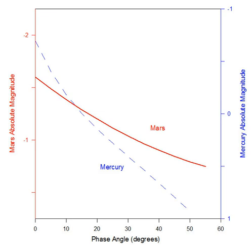The phase curves of many asteroids have also been observed, and they too may exhibit opposition surges. Asteroids can be physically classified in this way. The effects of rotation can be very large and have to be factored in before the phase curve is computed. An example of such a study is reported by R. Baker and colleagues.